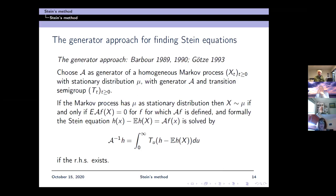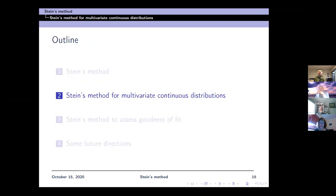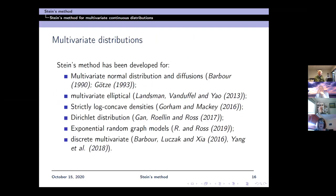We can solve the Stein equation formally using the transition semigroup of the generator, if it exists, through an integral. This is a very nice framework because we have a generator and a principle for solving the Stein equation. This has been applied for multivariate distributions: multivariate normal distributions and diffusions, multivariate elliptical by Barber, and a paper by Lanzmann, von Duffel, and Yao. Also strictly log-concave densities, Dirichlet distribution, exponential random graph models, and general discrete multivariate approximations by Barber, Mavima, Luchak, Agak Shah, and the paper Yang et al. for discrete multivariate goodness of fit.